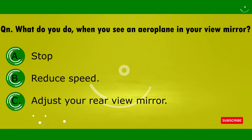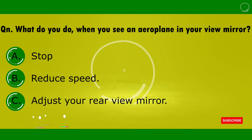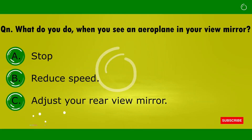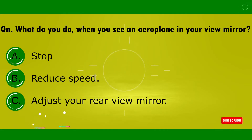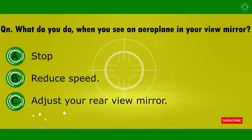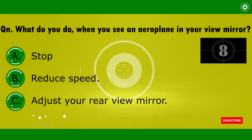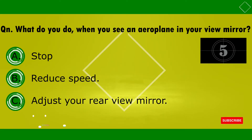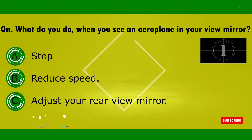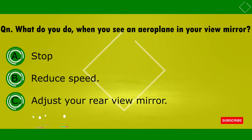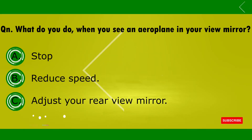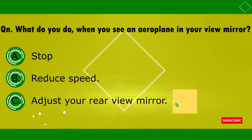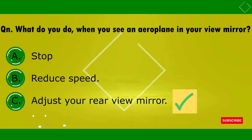Number two: what do you do when you see an airplane in your rear-view mirror? Do you stop, reduce speed, or adjust your rear-view mirror? Well, if you see an airplane in your rear-view mirror, it definitely means that your rear-view mirrors are positioned wrongly, and the only reasonable thing to do is to adjust your mirrors. So the correct answer for this question is option C.